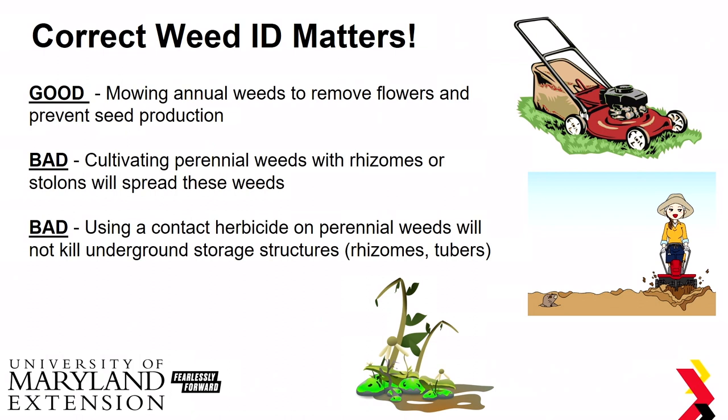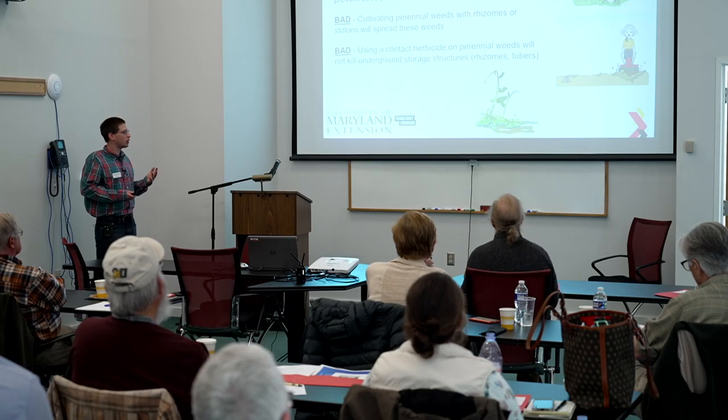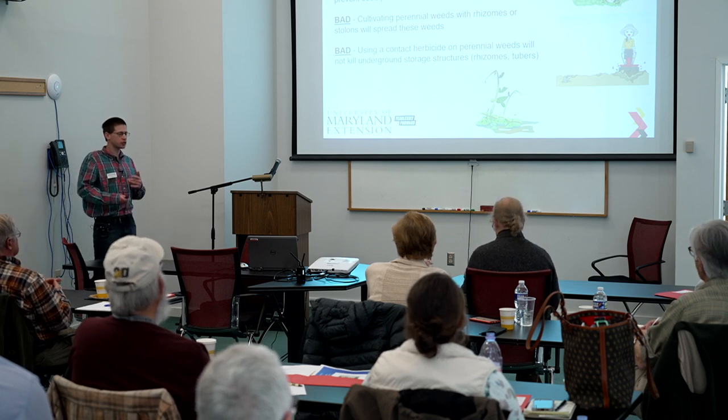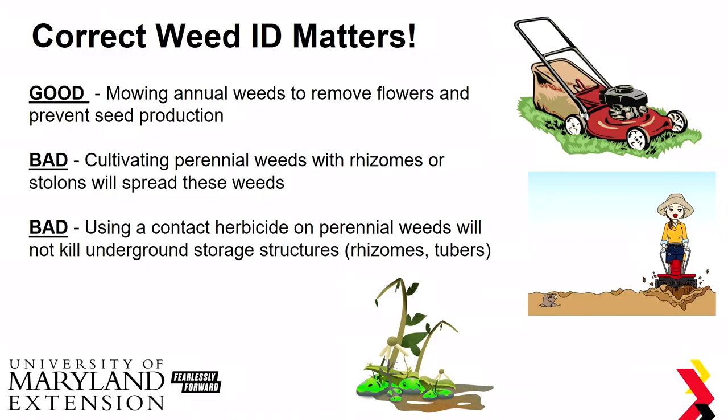Another thing about correct ID and control: good practice might be mowing a summer annual weed to help remove the flowers and prevent seed production. A bad practice would be cultivating something with rhizomes like Canada thistle — that's just going to spread that weed and introduce it to new places on your farm. Using a contact herbicide on a perennial weed will only kill the foliage above ground; it won't affect those perennial structures, and the weed will re-emerge.